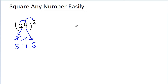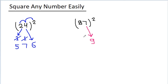And if we have to square 87, then 7 squared is 49. So we have to write only 1 digit, 9, and 4 will get carried. And 8 into 7 is 56, into 2 is 112, plus 4 is 116.